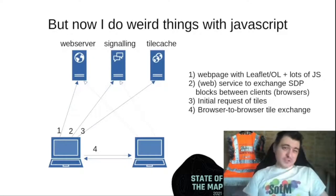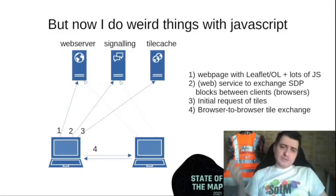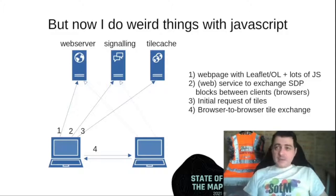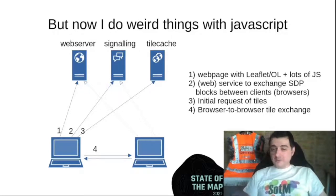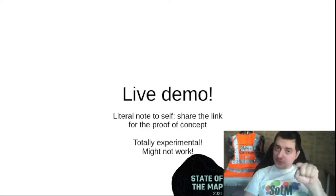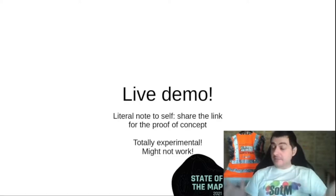The whole process should be like this: there's a web page with Leaflet or OpenLayers JavaScript, plus a signaling server which connects your browser with another browser. One of the browsers requests the tiles and that browser can spread the tiles to all connected peers. Is this possible at all? I'm going to make a live demo. I'm going to ask Ivan from the future to paste a link to the working proof of concept in the conference chat right now. Keep in mind this is experimental and might fail due to network topology.